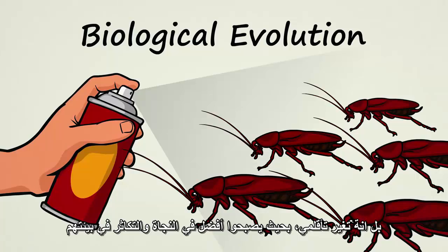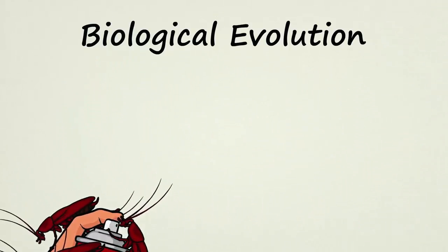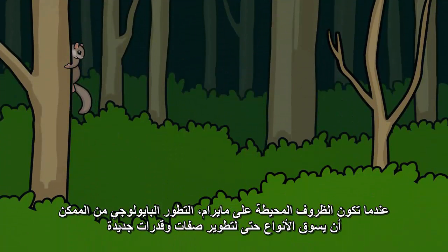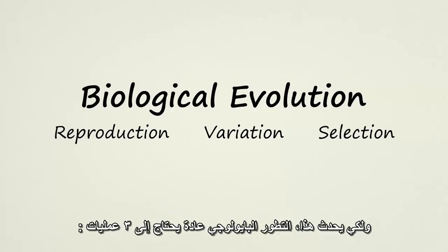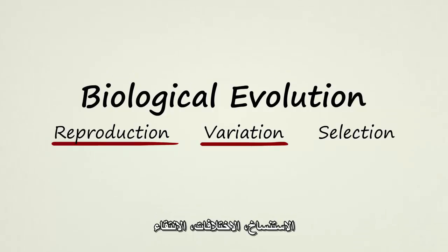Populations become better able to survive and reproduce within their environments. When conditions are right, biological evolution can even drive a species to develop brand new characteristics and abilities. For this to happen, biological evolution typically requires three conditions: reproduction, variation, and selection.